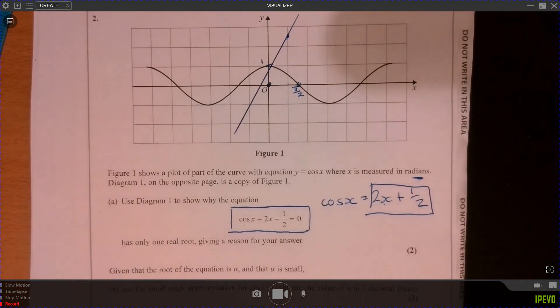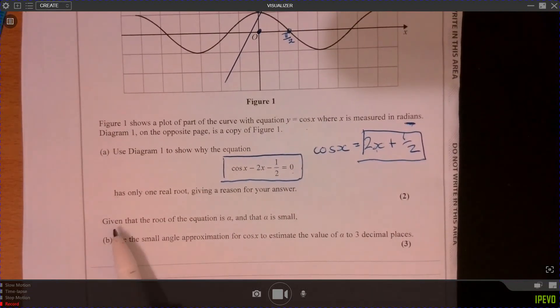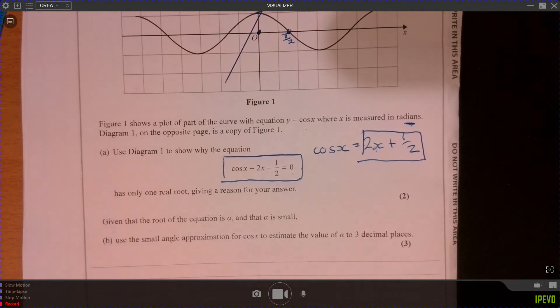Part b. So let's have a look at part b. So part b says given that the root of the equation is alpha and that alpha is small, use small angle approximations.